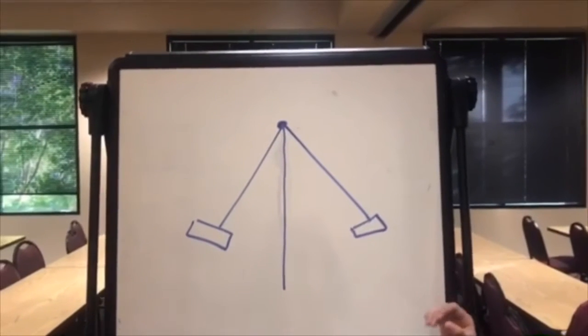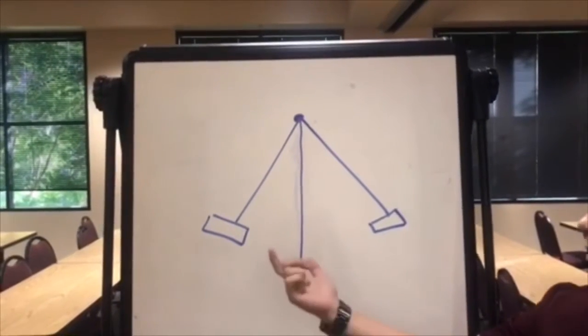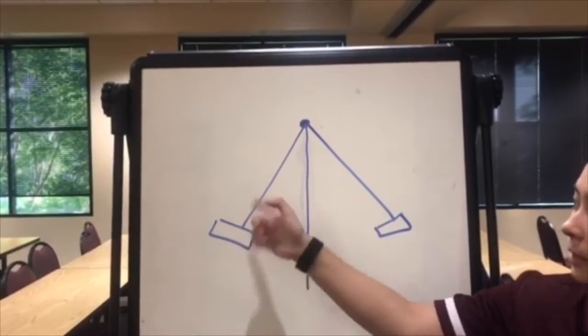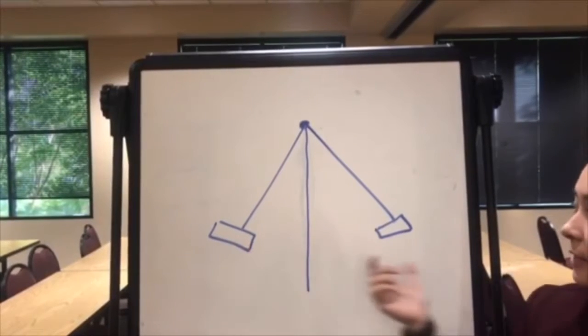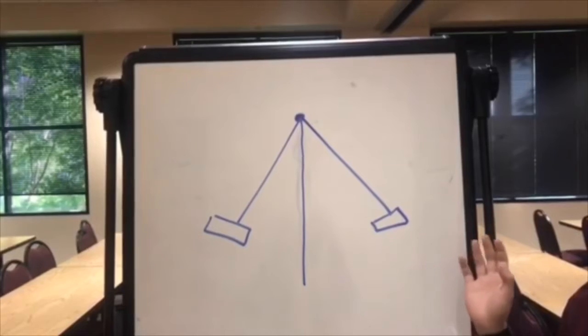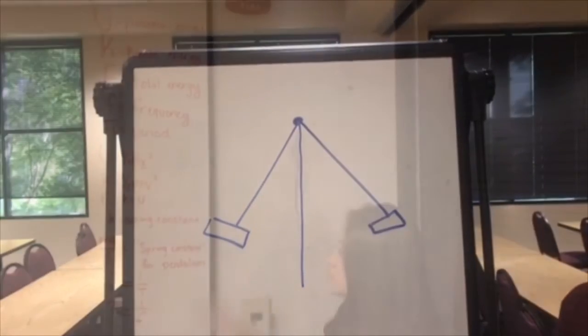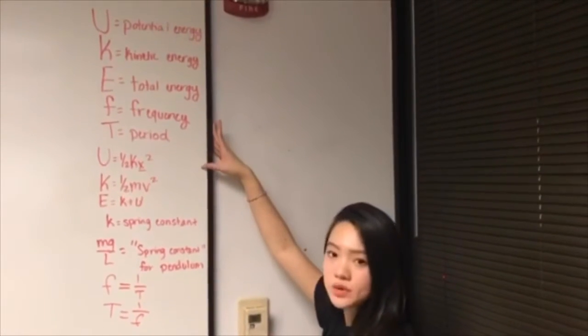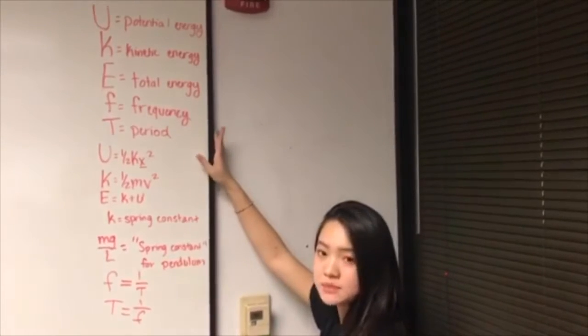The simple pendulum theory is the idea that we have an object starting at an angle and attached to a string being released, and then it's at constant motion due to gravity being the only force applied to it because there's no friction. These are the values and the formulas we're going to be using to derive the simple pendulum.